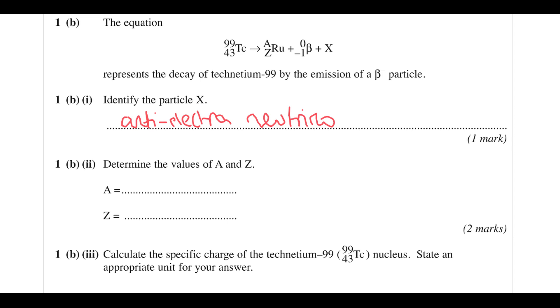For the values A and Z: the nuclear number doesn't change during beta decay, so that's still going to be 99. The proton number increases by 1, so it's going to be 44.